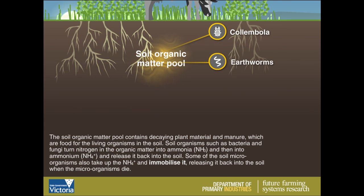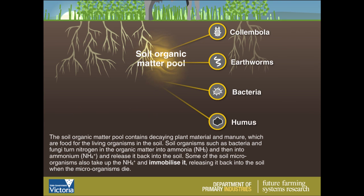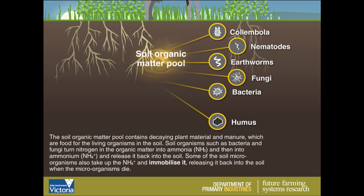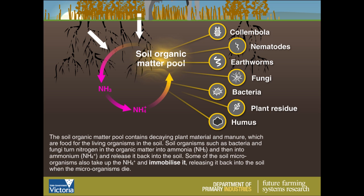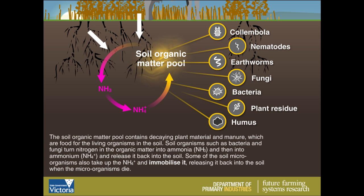The soil organic matter pool contains decaying plant material and manure, which are food for the living organisms in the soil. Soil organisms such as bacteria and fungi turn nitrogen in the organic matter into ammonia and then into ammonium, releasing it back into the soil. Some of the soil microorganisms also take up the ammonium and immobilise it, releasing it back into the soil when the microorganisms die.